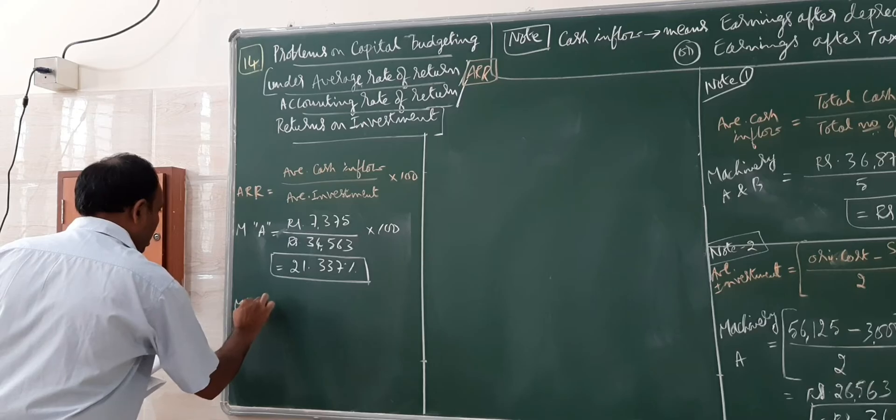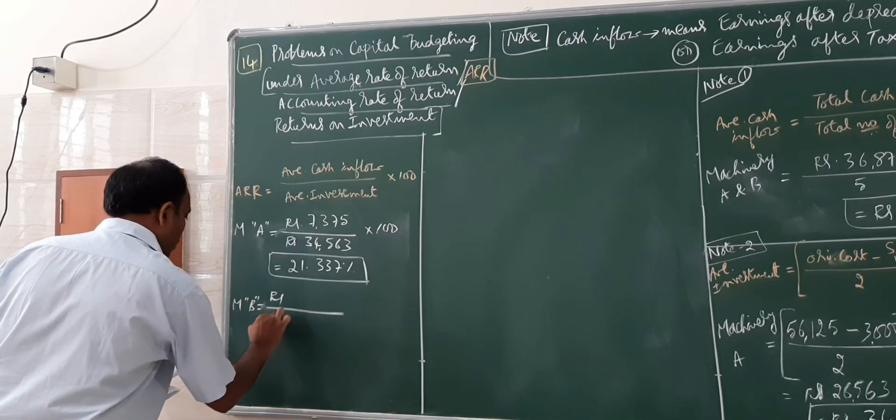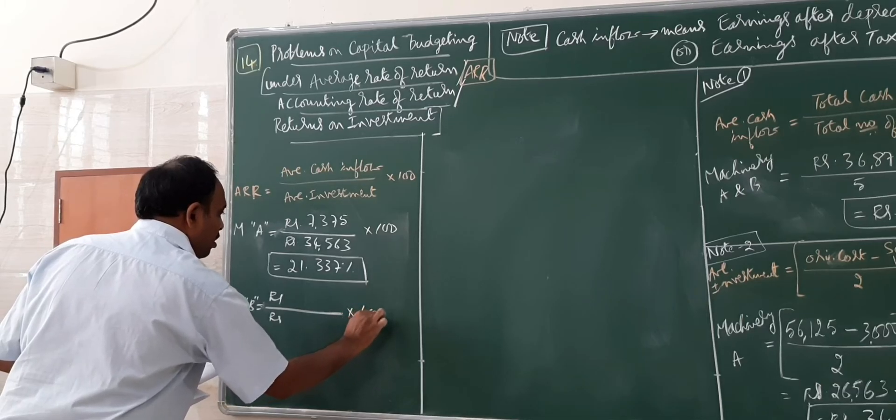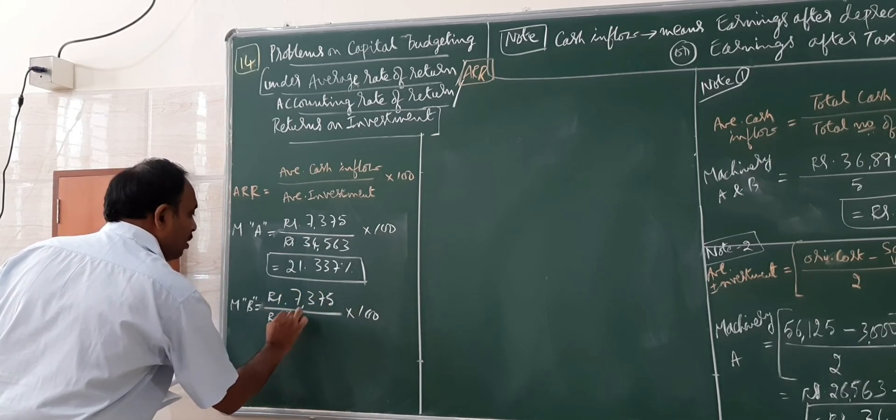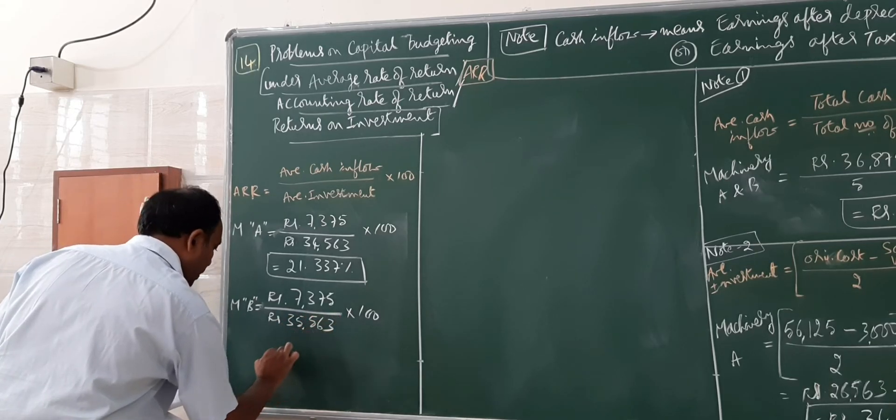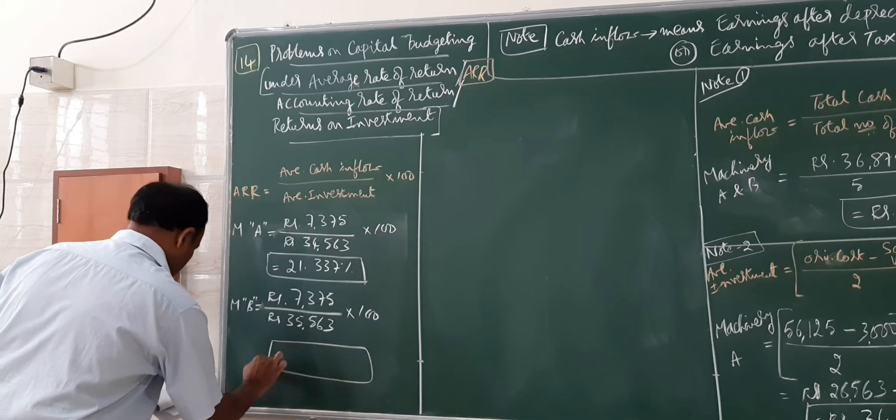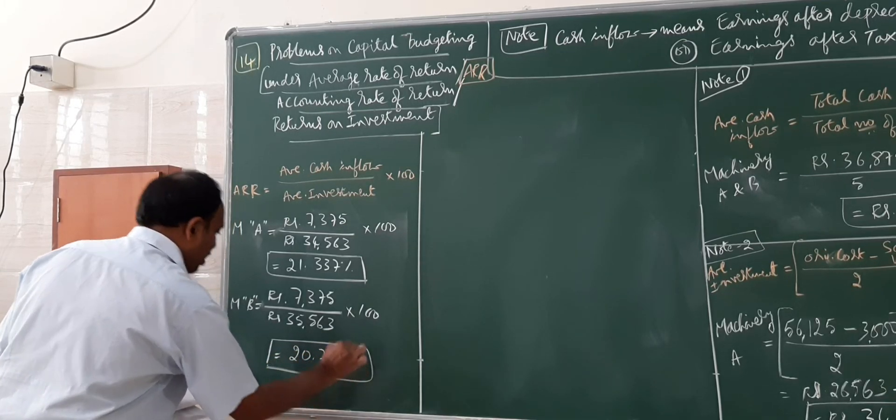Machinery B, cash inflow average is same but average investment is 35,563 into 100. It comes to 21.337. So this gives us 20.73%.